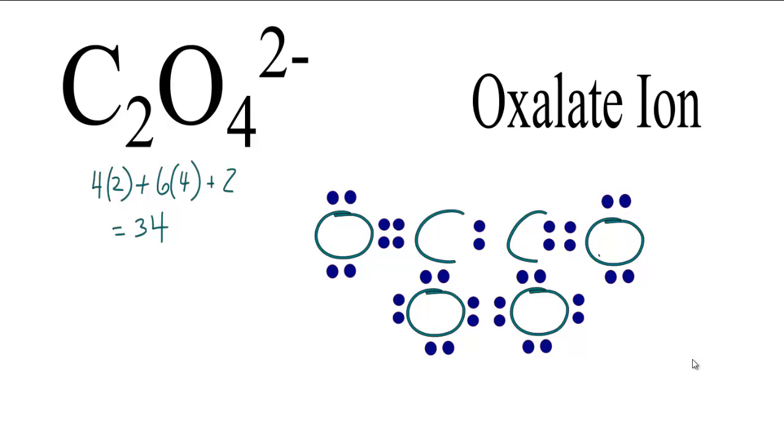The trick here, when we ran out of valence electrons, was to form double bonds between the carbon and oxygens. That happens quite frequently in drawing Lewis structures.